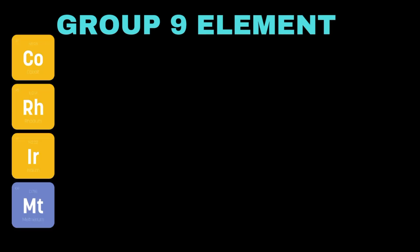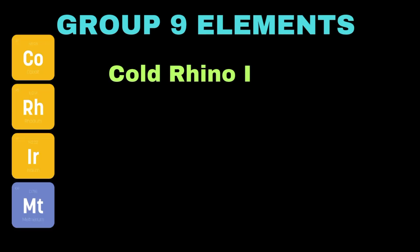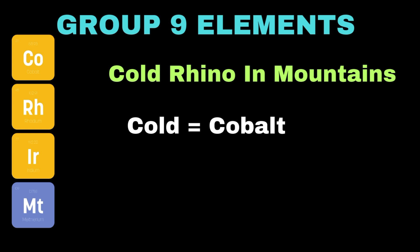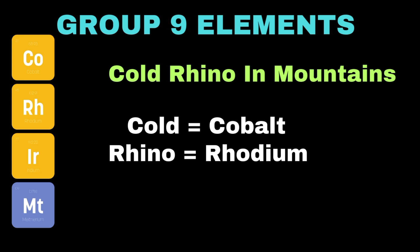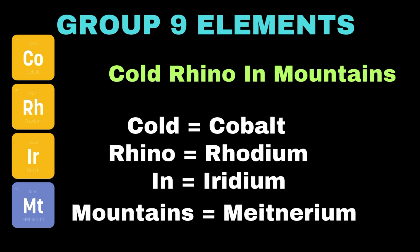Now let's move towards group 9 elements. The mnemonic to remember their names is: 'Cold rhino in mountains.' Here 'cold' is used for cobalt, 'rhino' is used for rhodium, 'in' is used for iridium, and 'mountain' refers to meitnerium.